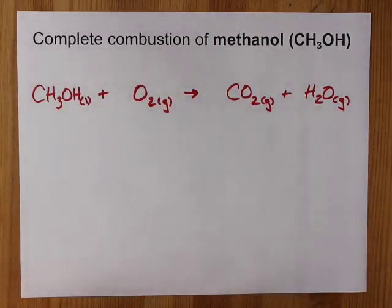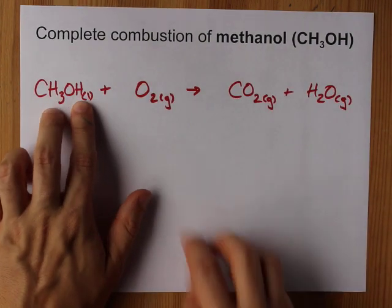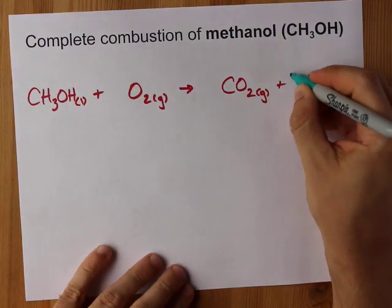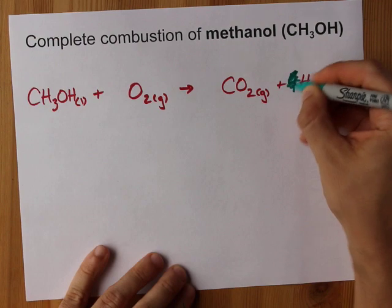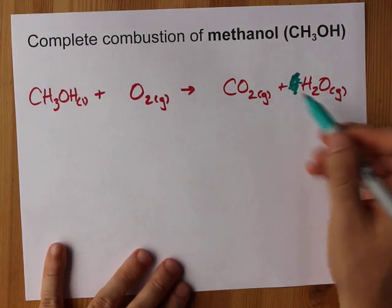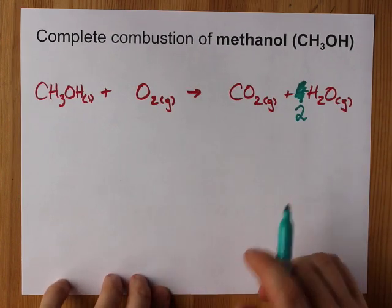Now let's balance it together, shall we? One carbon, one carbon. Great. Four hydrogens. Watch out, it's four hydrogens here. It means I'm going to need four hydrogens here. Oh no, I almost made a mistake. They already come in pairs. There's two H's per water, so I only need two of those pairs to give me the four hydrogens. Great.